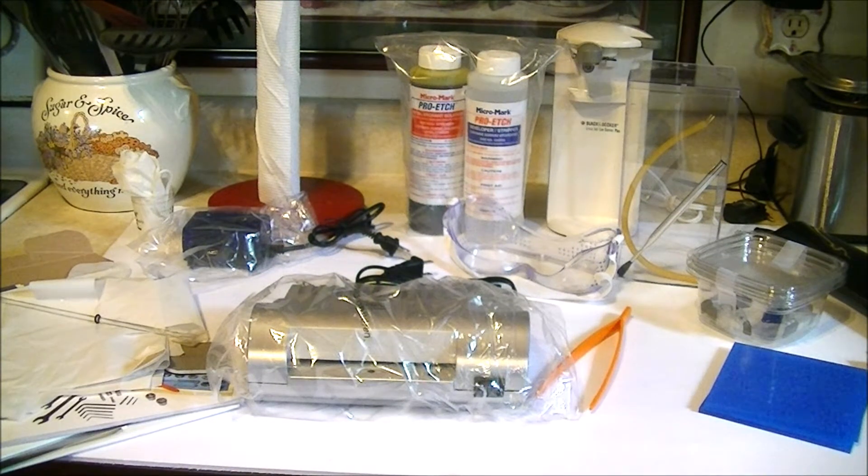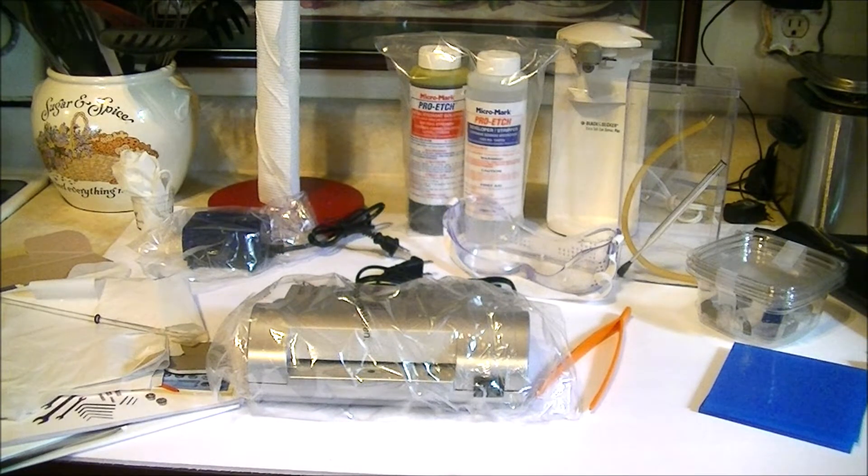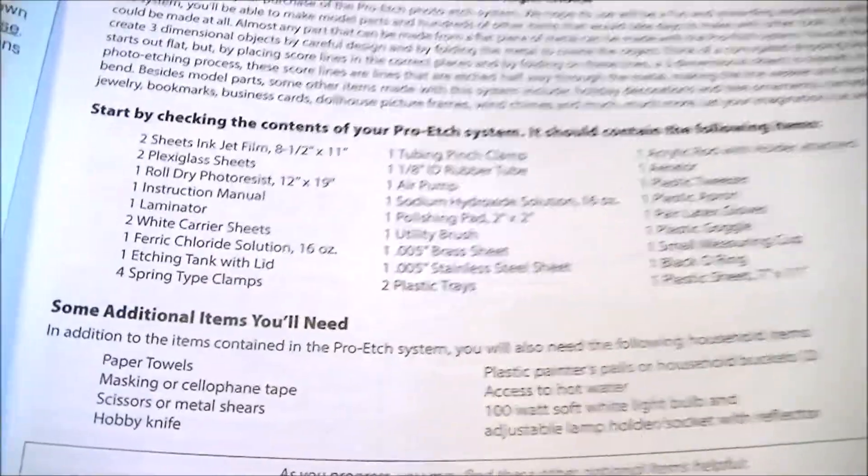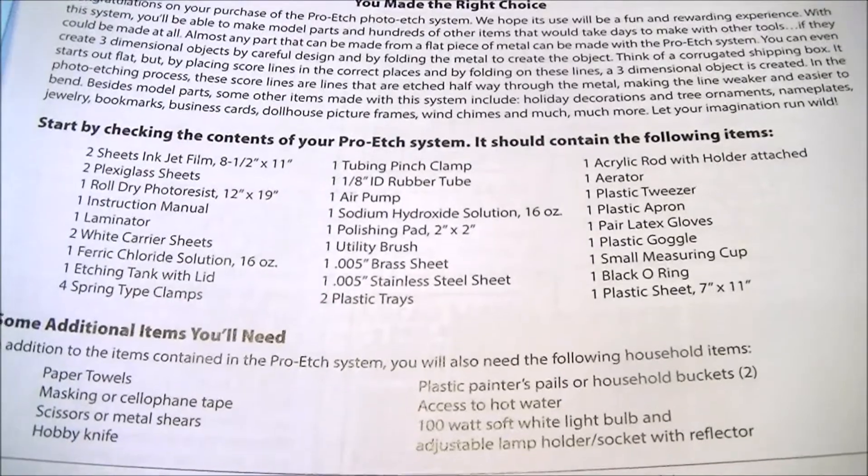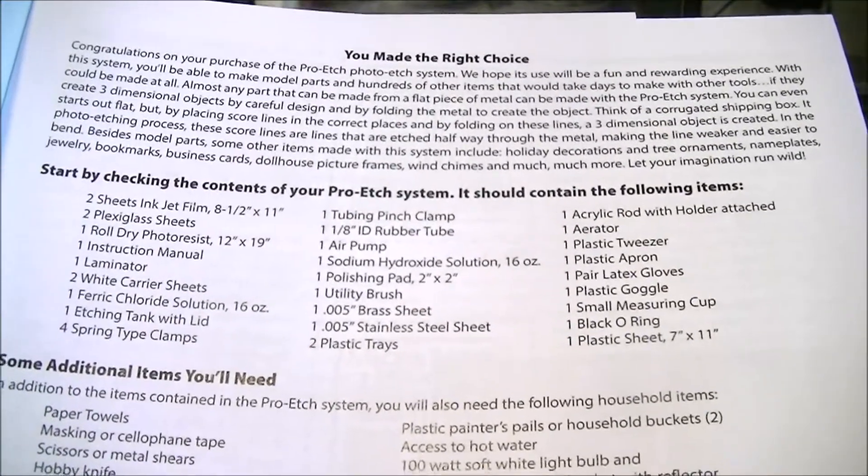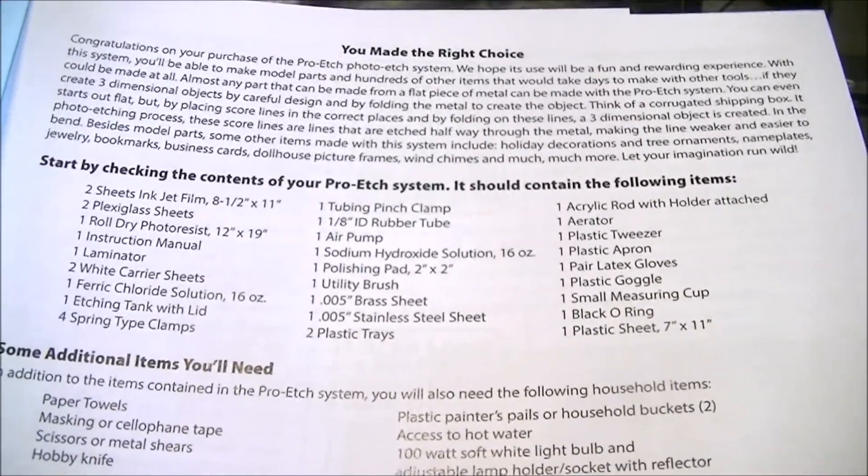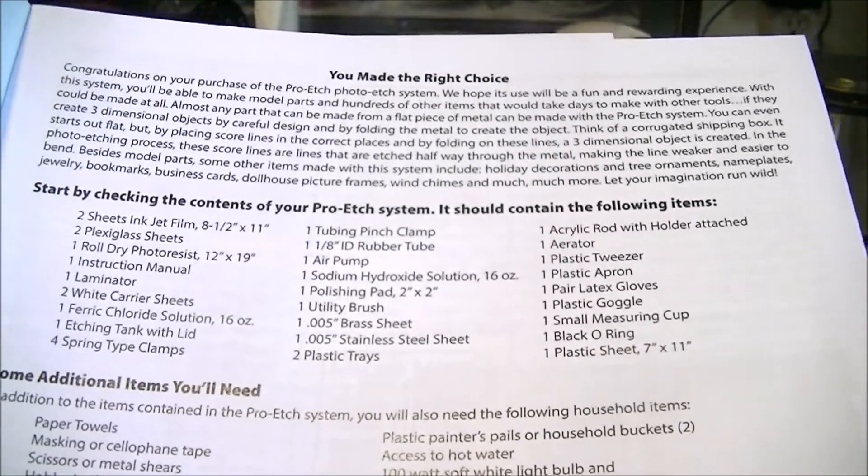What you get: two sheets of inkjet film eight and a half by eleven, two sheets of plexiglass sheet, one dry roll photo resist 12 by 19, one instruction manual, one laminator, two white carrier sheets.